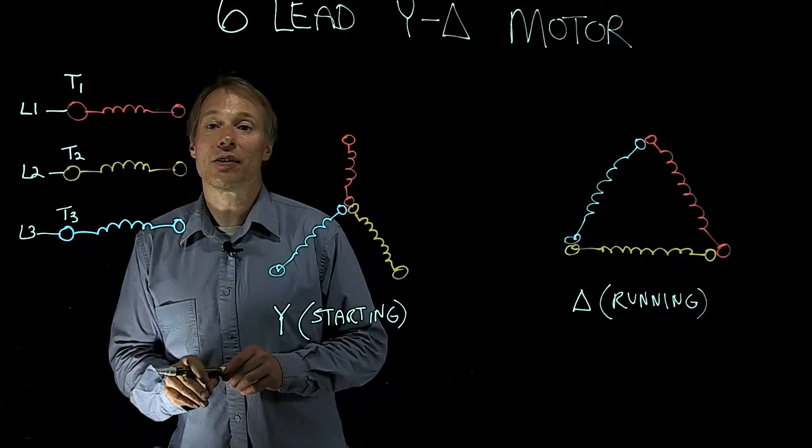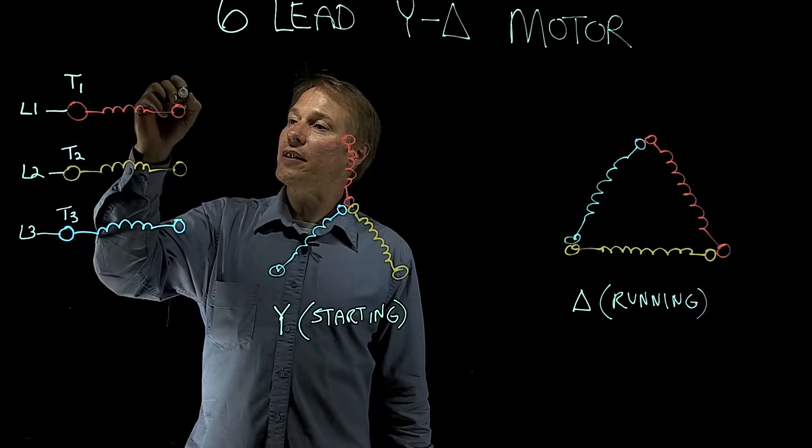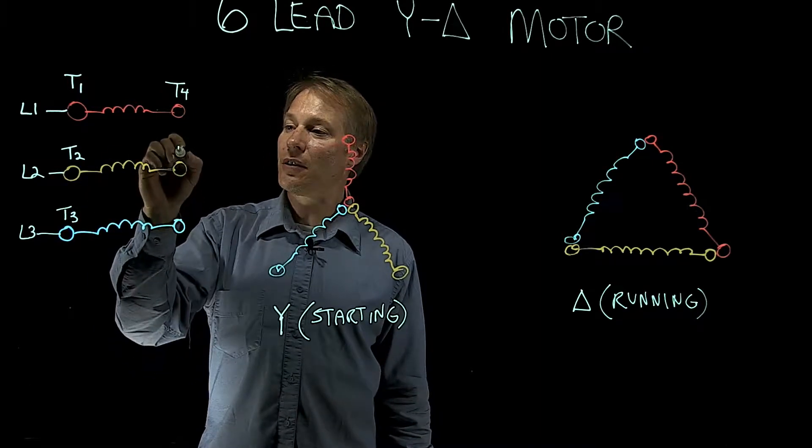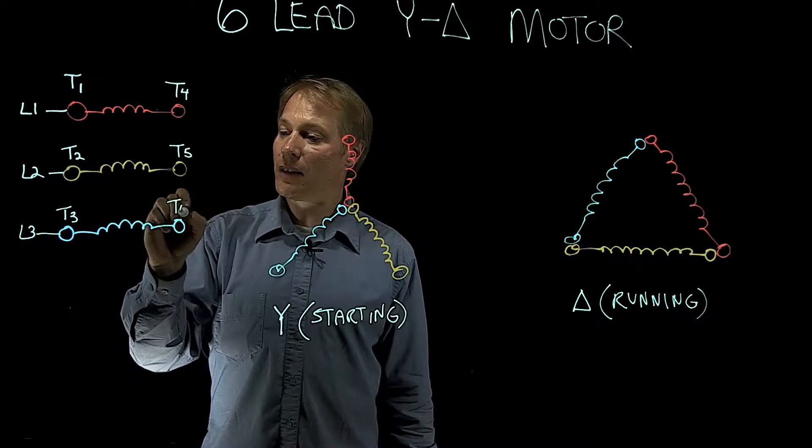Now if we carry on the terminal numbers, same winding here, if this is T1, on the other side of T1 will be T4. The other side of T2 will be T5, and the other side of T3 will be T6.